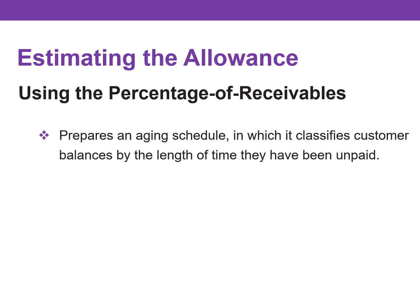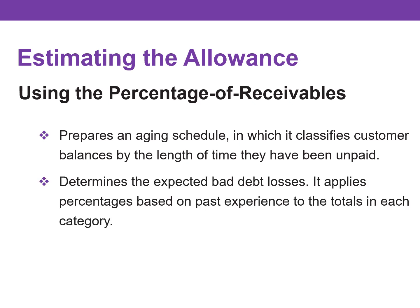The company prepares an aging schedule, which classifies customer balances by the length of time they have been unpaid. Because of its emphasis on time, the analysis is often called aging the accounts receivable. After the company arranges the accounts by age, it determines the expected bad debt losses. It applies percentages based on past experiences to the totals in each category.